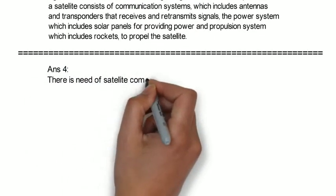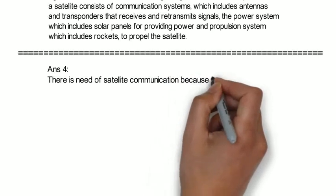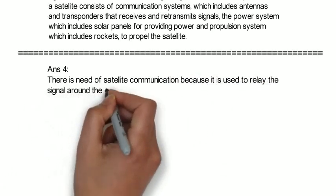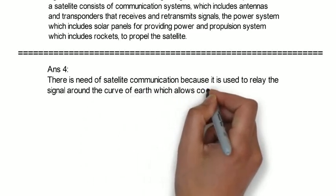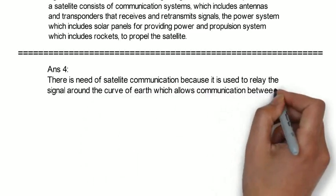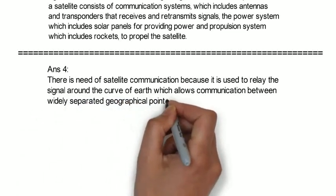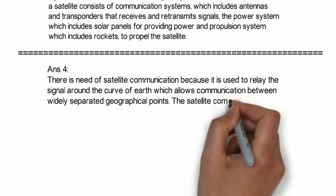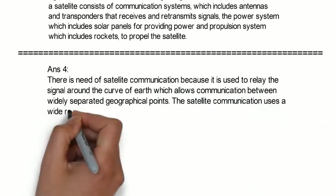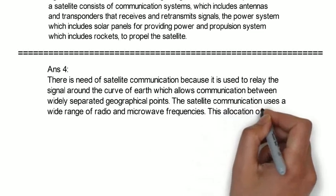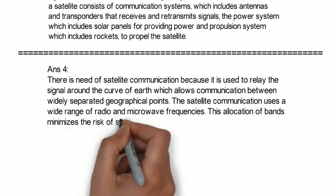Because it is used to relay the signal around the curve of Earth, which allows communication between widely separated geographical points. The satellite communication uses a wide range of radio and microwave frequencies. This allocation of bands minimizes the risk of signal interference.